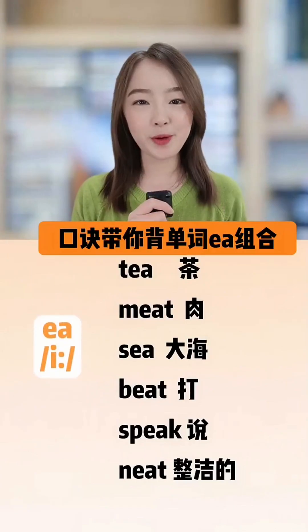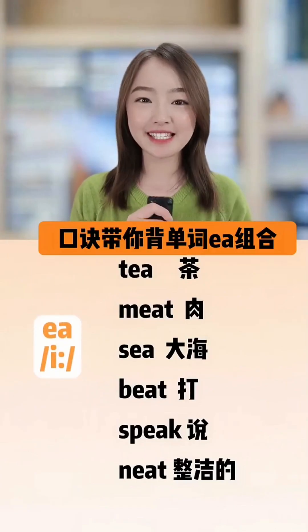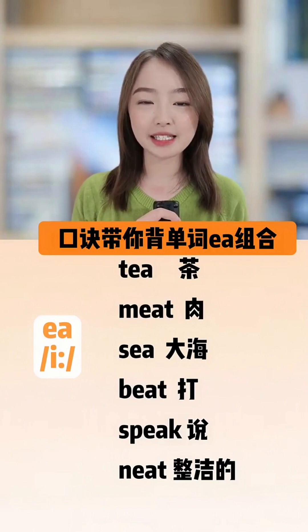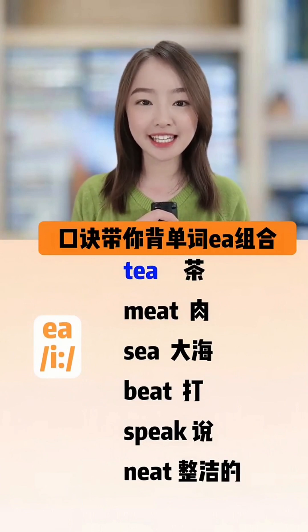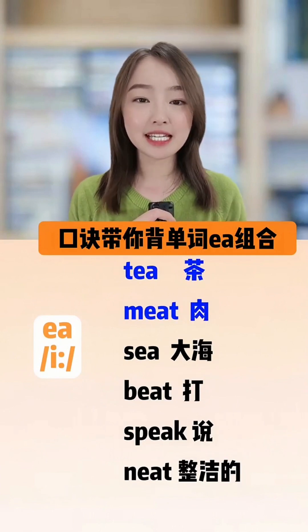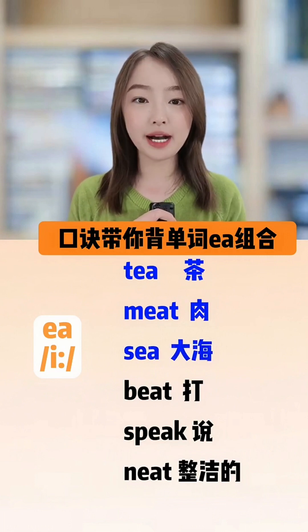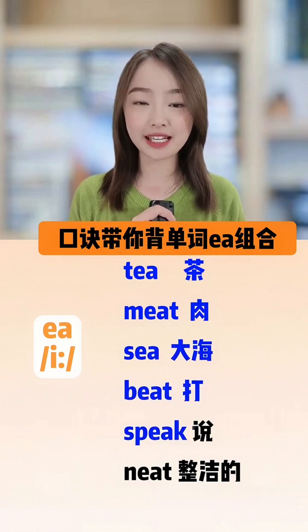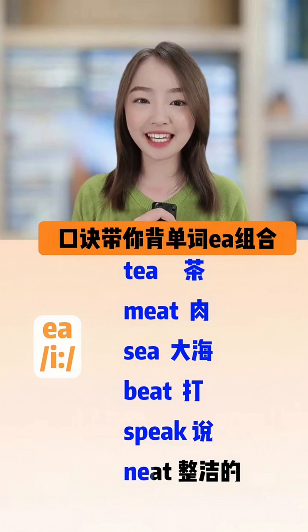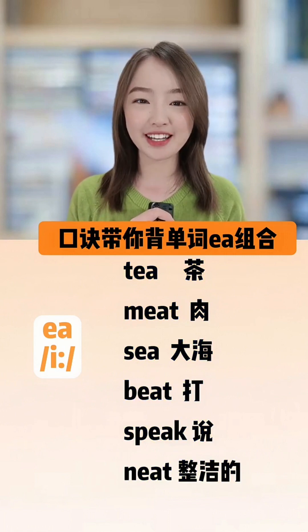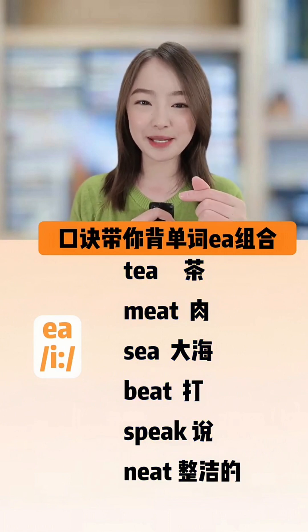单词不用背，一记一串。EA组合常发E音：meat，eat，speak，neat。你都学会了吗？学会了给老师一颗小星星吗？